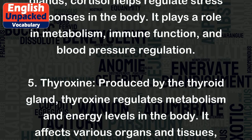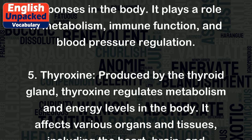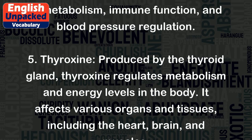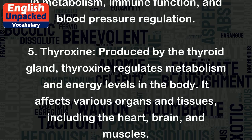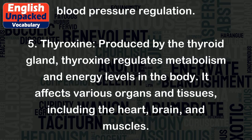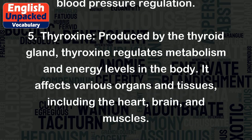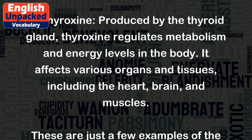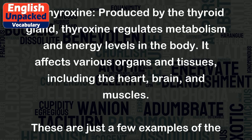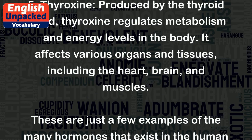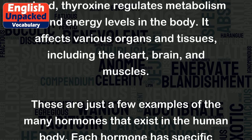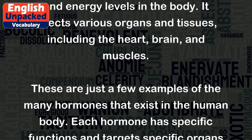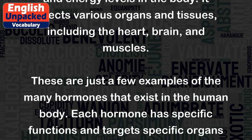5. Thyroxine. Produced by the thyroid gland, thyroxine regulates metabolism and energy levels in the body. It affects various organs and tissues, including the heart, brain, and muscles.